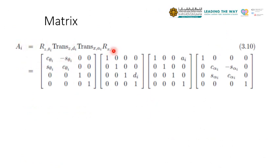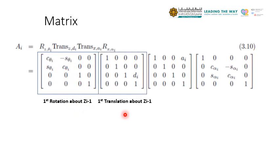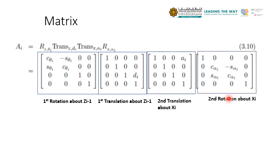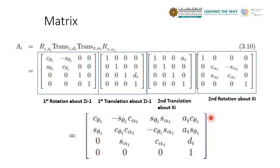So your total transformation consists of the four individual transformations. First is basically rotation about the z_{i-1} theta and then followed by the translation along z_{i-1} and then basically second translation along x_i and the second rotation about x_i. And then if you do all this multiplication, then you will end up with getting this transformation matrix between the two adjacent joints of any robotics system.